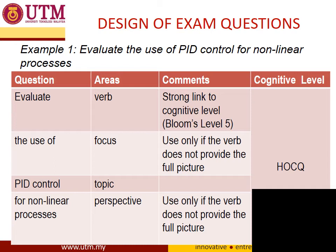For example, if your question is 'Evaluate the use of PID control for non-linear process,' you can categorize it into four areas. 'Evaluate' is the verb, which strongly links to Bloom's level 5 — a higher order cognitive question. 'The use of' is the focus, included when the verb alone does not provide the full picture. 'PID control' is the topic, and 'for non-linear process' is the perspective.